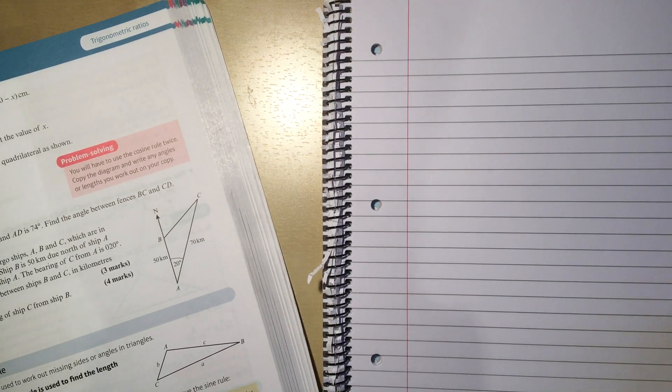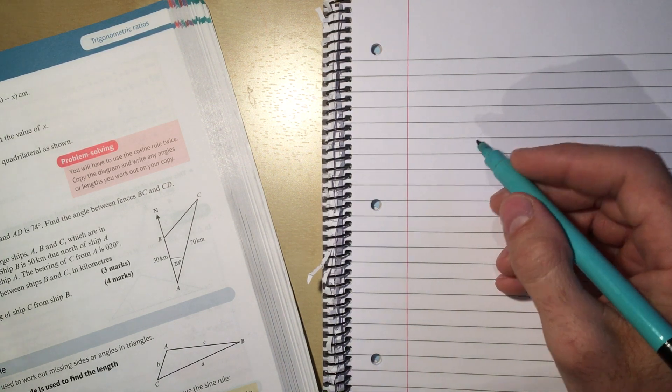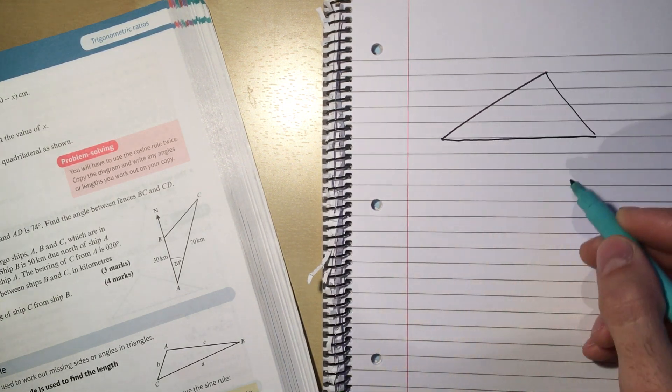We saw in the cosine rule that we wanted to make a non-right angle triangle version of Pythagoras theorem. Well with the sine rule we want to make a non-right angle triangle version of SOHCAHTOA. That's the way I like to think about it.